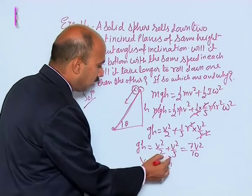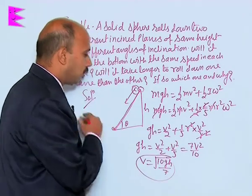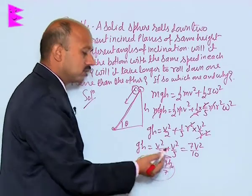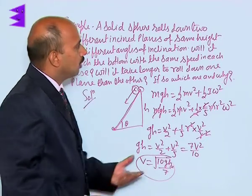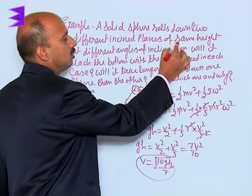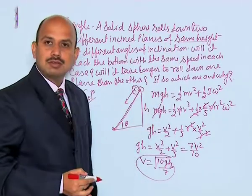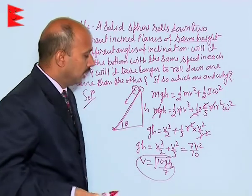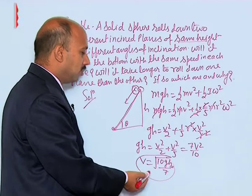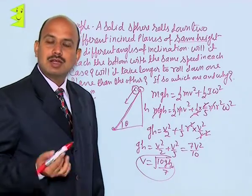Now, see in this case, velocity at the bottom depends on height h and g. g remains constant. In the equation h is given to you, the same in both cases, which means velocity does not depend on the angle of inclination. So, the velocity will remain same whether the angles of inclination are different.